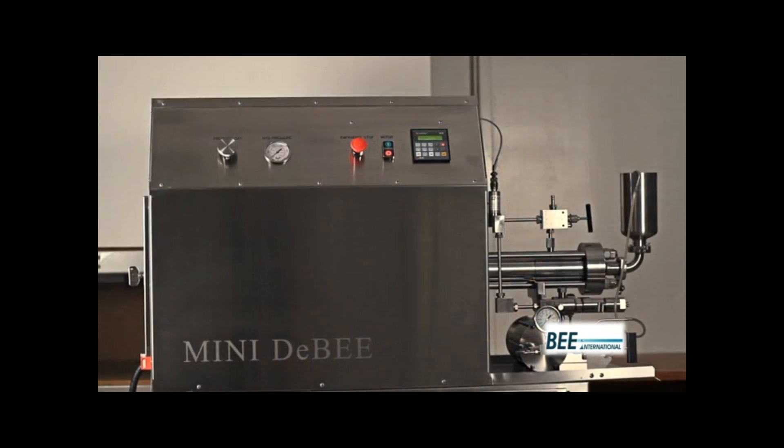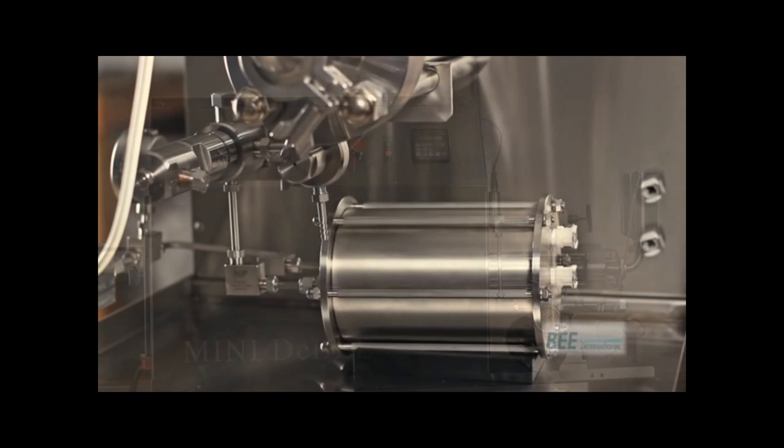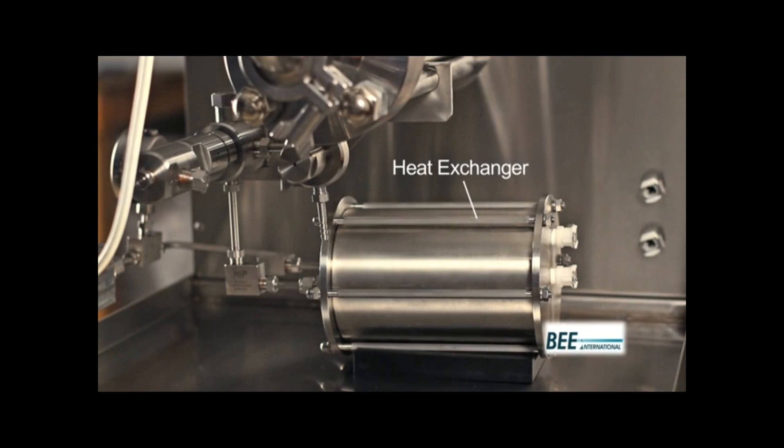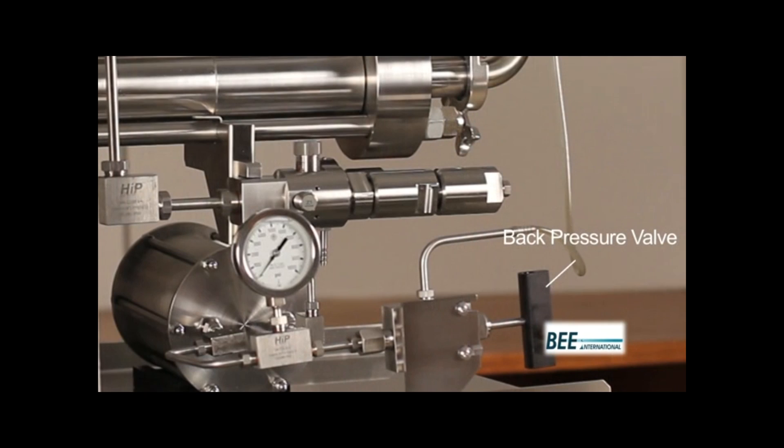On the processing side, we have the inlet reservoir, the intensifier, the priming valve, the emulsifying cell or EC, the heat exchanger, the back pressure gauge, and the back pressure valve.